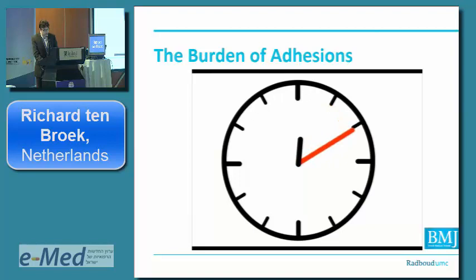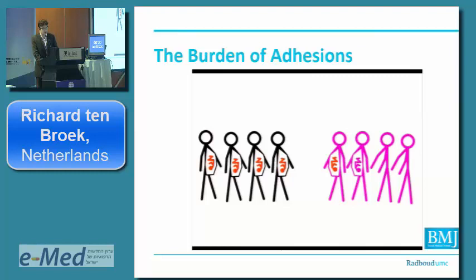Lysis of adhesions prolonged operation time by 15 minutes. The risk of bowel injury during lysis of adhesions was almost 6%. Ten studies assessed fertility rates in female patients with inflammatory bowel disease. Patients had normal fertility before surgery. After surgery, only half of patients trying to conceive became pregnant. Moreover, a quarter of post-surgery patients had sought fertility treatments.